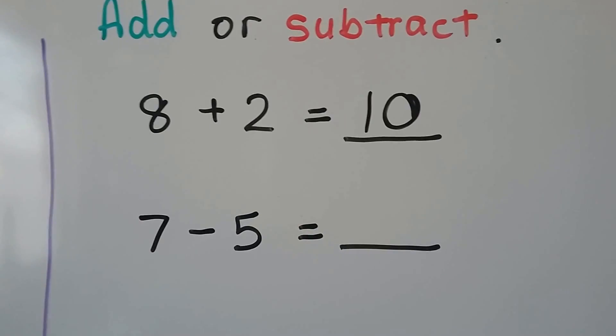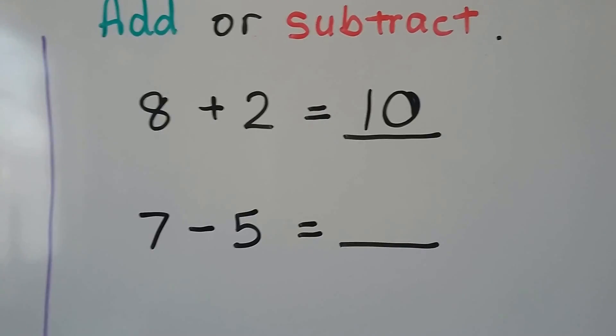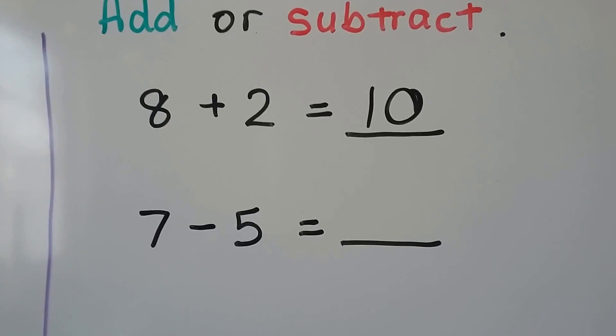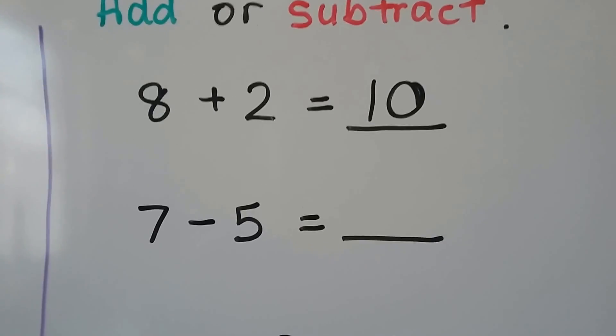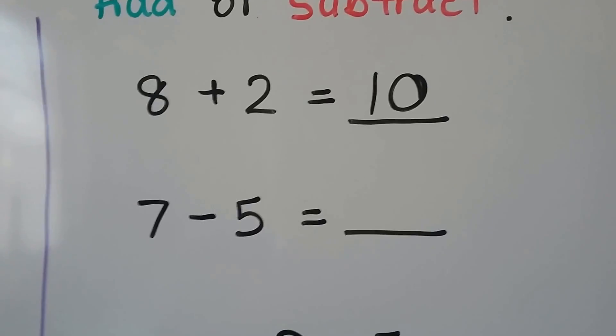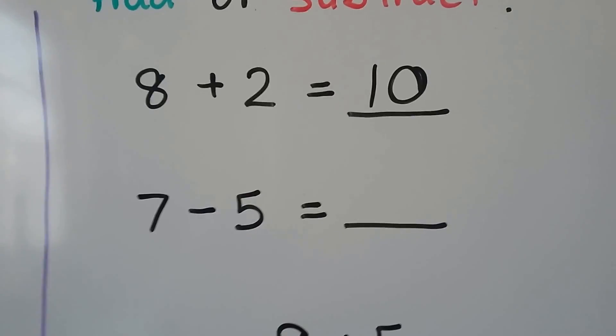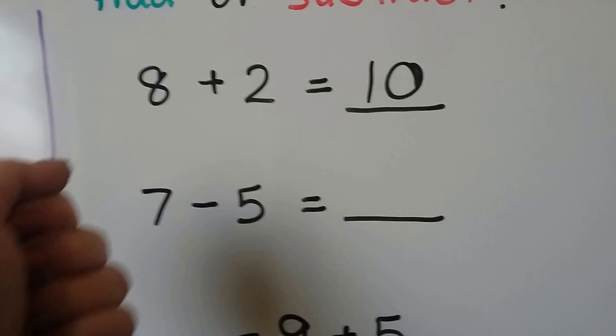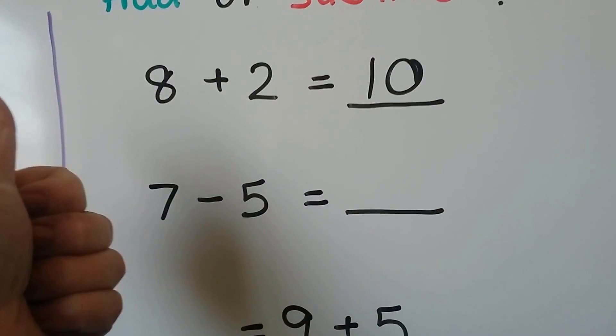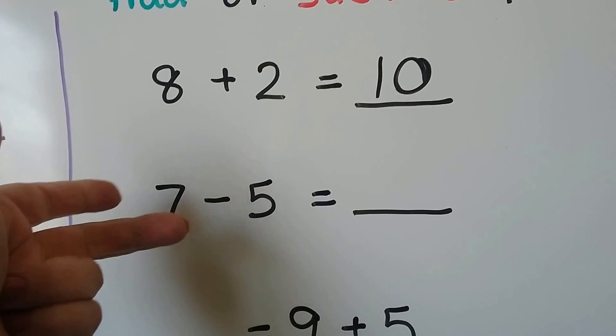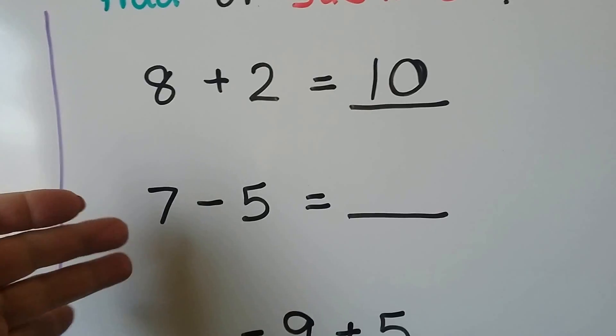7 minus 5. We can count back. We can start at the 7 and count back 5: 7, 6, 5, 4, 3, 2.